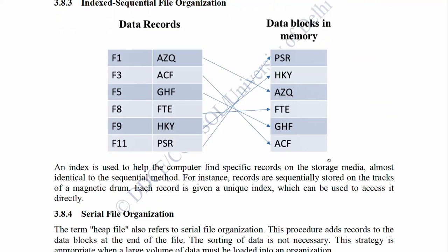3.8.3 Indexed Sequential File Organization: An index is used to help the customer find specific records on the storage media, almost identical to the sequential method. For instance, records are sequentially stored on the tracks of a magnetic drum. Each record is given a unique index which can be used to access it directly.